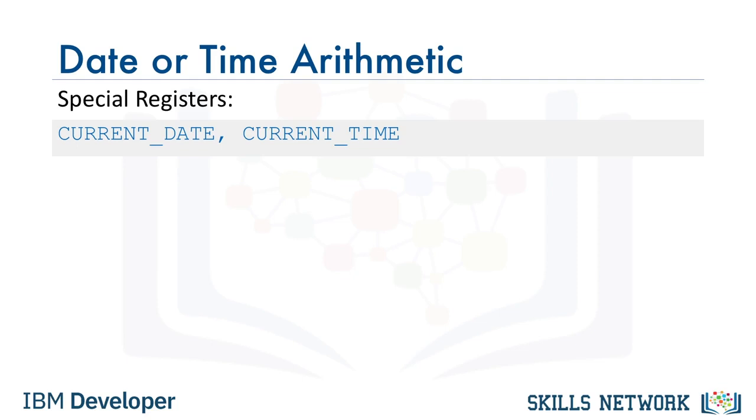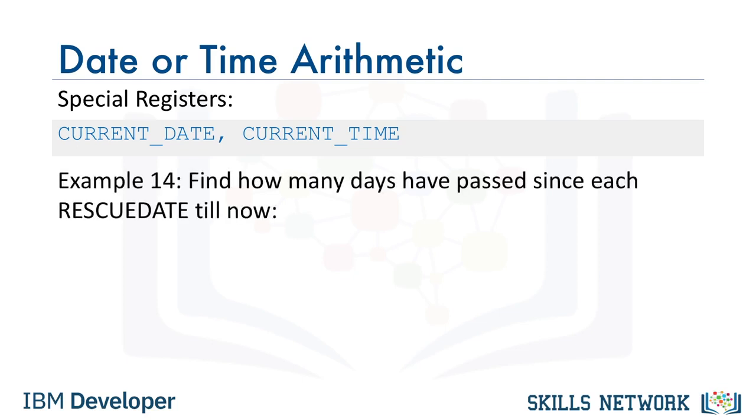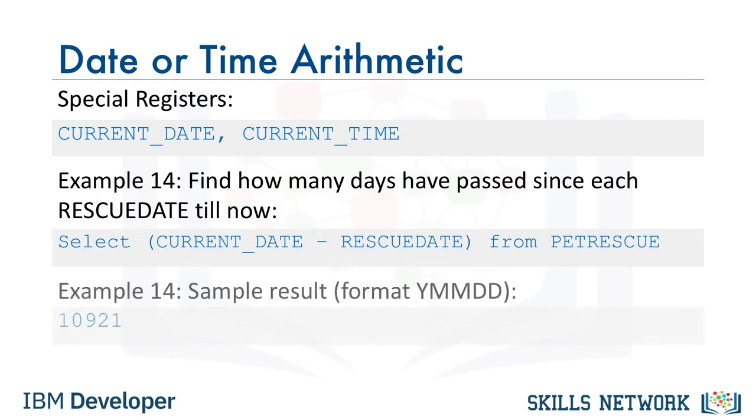Special registers current time and current date are also available. For example, to find out how many days have passed since each rescue date till now, select current date minus rescue date from pet rescue. The result will be in years, months, days.